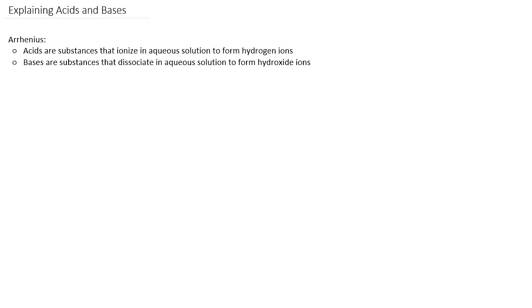There's been several theories about what an acid or a base is, but in 1887, Arrhenius proposed these definitions. Acids are substances that ionize in aqueous solution to form hydrogen ions, and bases are substances that dissociate in aqueous solution to form hydroxide ions. Ionization and dissociation are very similar, and it depends on whether it was originally an ionic bond or not.